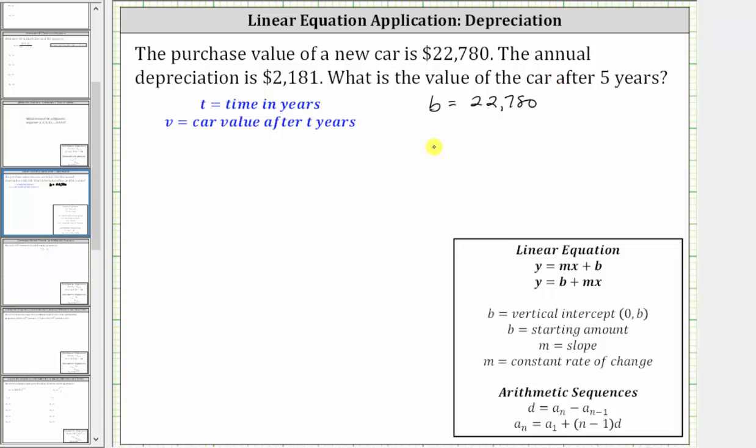And then because the annual depreciation is $2,181, which decreases the value of the car, we know m, the constant rate of change or slope, is negative 2,181, which means the car value v after t years is equal to the new purchase value of 22,780, which is b, and then we have plus m times t, which in this case, because m is negative, we have minus 2,181 times t.